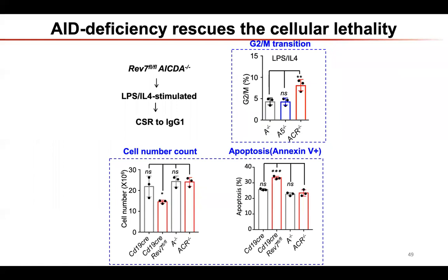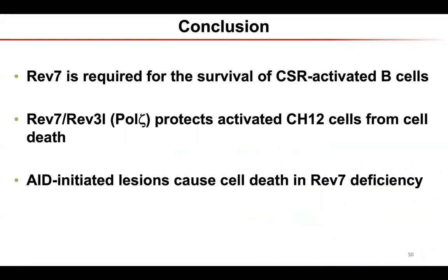We generated conditional knockout mice and bred them with AID knockout. Whenever we knock out AID, which generates the DNA damages, it can fully rescue cell mortality. This means whenever we have both AID knockout and REV7 knockout, we never see dramatic cell death again. So the cell death is caused by AID-generated breaks. In the REV7-deficient background, AID-initiated lesions are very toxic.